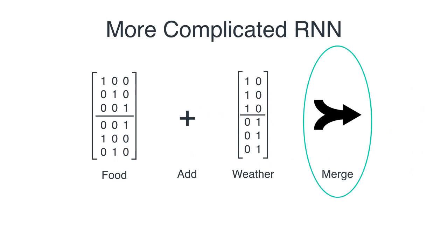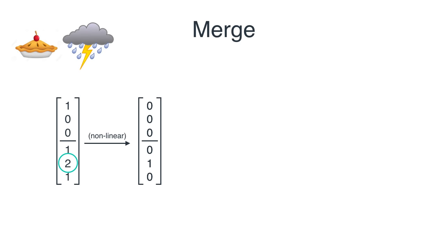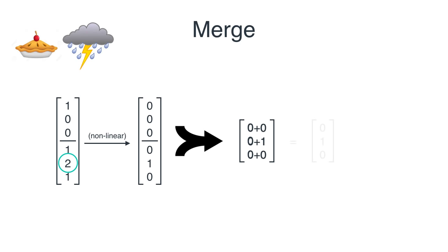To extract the burger signal, we use the merge map. It applies a nonlinear function that takes the largest entry and turns it into a one, and all other entries into zeros. Then the merge map takes the top three entries and the bottom three entries and adds them, giving the result: the vector (0,1,0), which corresponds to a burger. So if I take an apple pie and a rainy day, I get a burger.